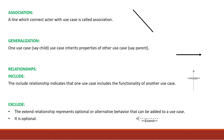The next component is association. It is a line which connects actors with use cases. It represents the function which an actor is going to perform and shows which actor performs which function. Association is represented by a simple line.